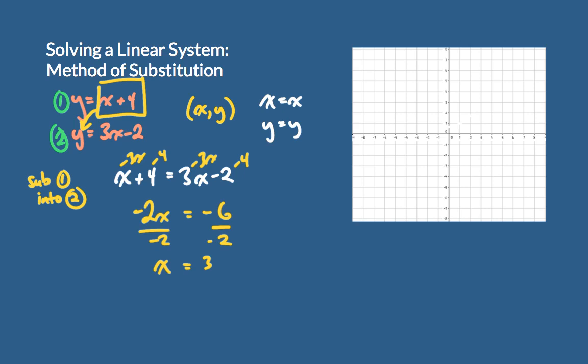What is y when x equals 3? We substitute x equals 3 back in — it doesn't matter which equation we use to find the y coordinate of the solution, because it will be the same for both. Substituting x equals 3 into equation 1: y equals 3 plus 4, so y equals 7.